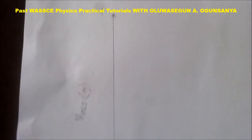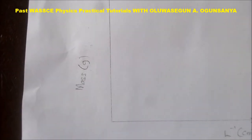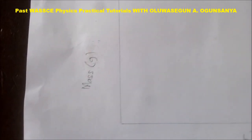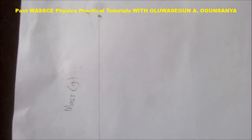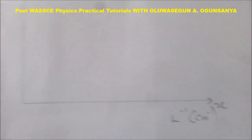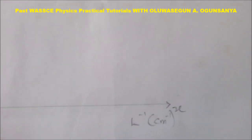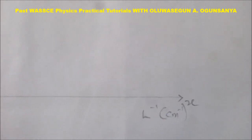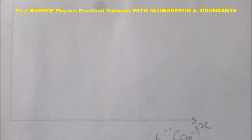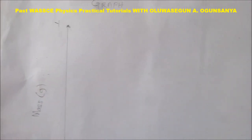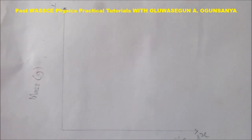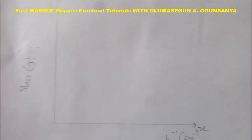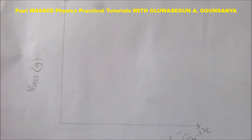For the graph, this is just a sketch. Mass in grams is on the Y axis, while L inverse is on the X axis, as stated in the question. The value of M is now being plotted against L inverse.